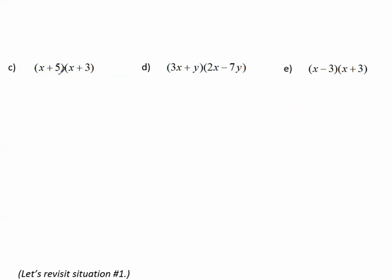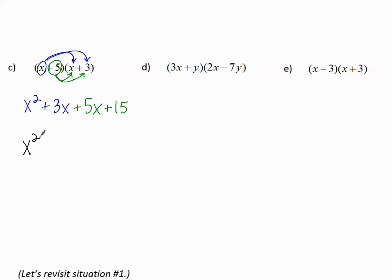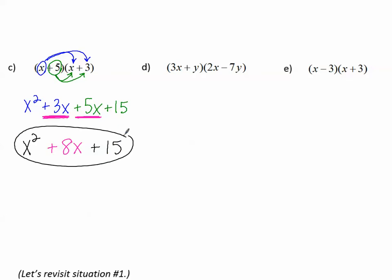Let's try multiplying a binomial times a binomial. Distribute the first term x to the second binomial: x times x makes x squared; x times 3 makes positive 3x. Now distribute positive 5 to both terms: positive 5 times x makes positive 5x; positive 5 times positive 3 makes positive 15. Combining like terms: x squared stays; positive 3x and positive 5x make positive 8x; and positive 15 is the only constant. The answer is the trinomial x squared plus 8x plus 15.